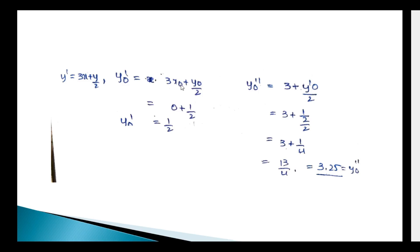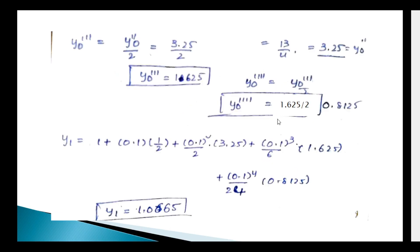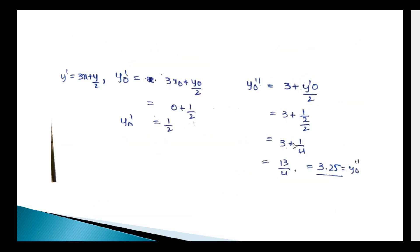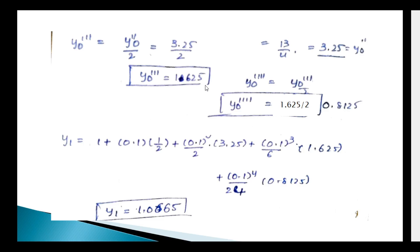Next, y₀'' = 3 + y₀'/2 = 3 + (1/2)/2 = 3 + 1/4 = 13/4 = 3.25. Next, y₀''' = y₀''/2 = 3.25/2 = 1.625. And y₀'''' = y₀'''/2 = 1.625/2 = 0.8125.